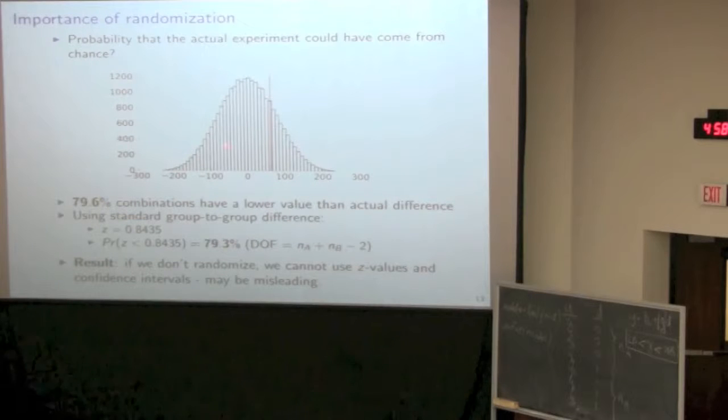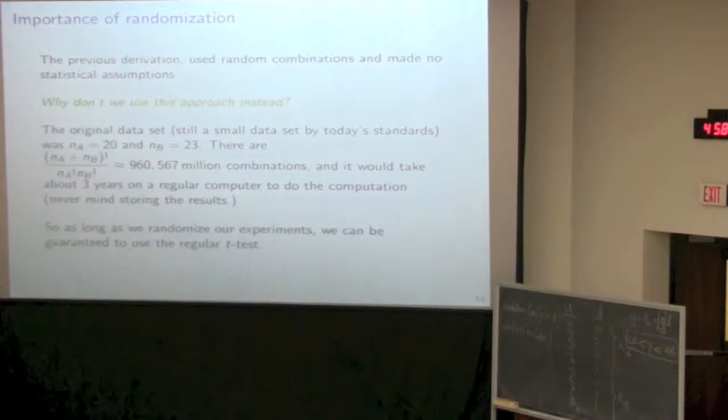Now you might sit back and think, well, I can always just go ahead and shuffle my data because it's so easy to do with computers. But it's not true. I intentionally chose this very small data set. Here's a more realistic size, we have 20 data points in A and 23 in B. And four years ago when I did this, there's 960 million combinations, and it would have taken about three years to do that shuffling. So even for very small data sets, it's not a realistic proposition to go ahead and use the shuffling approach. Which is great, because it says we don't have to do that because we can use the t-test to get an identical result. We can use our t-tests and believe in them, and they'll work for us on very large data sets.